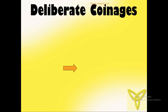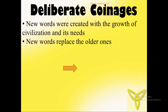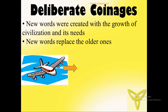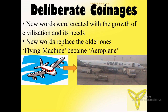The next process is deliberate coinages — new words are created with the growth of civilization and according to the needs of society, replacing older ones. For example, what was once called a 'flying machine' is now known as an 'airplane.'